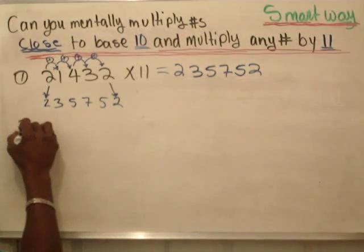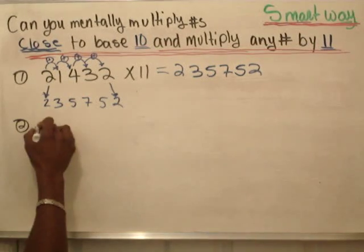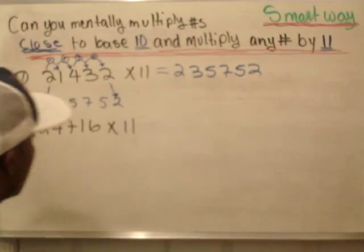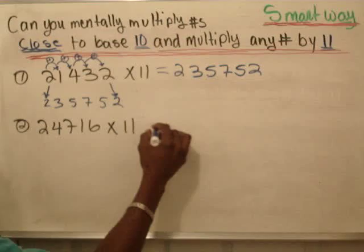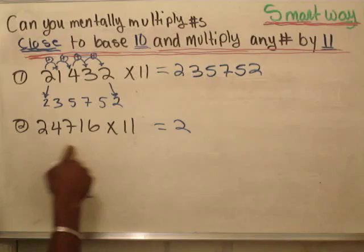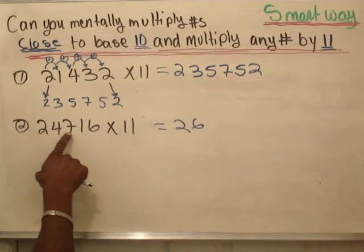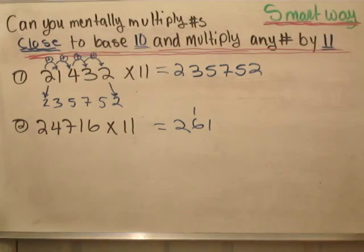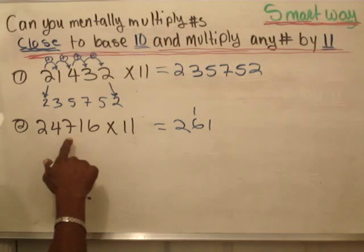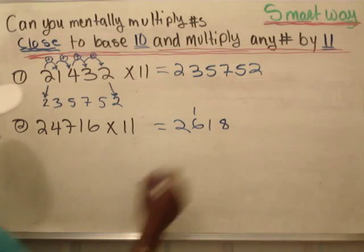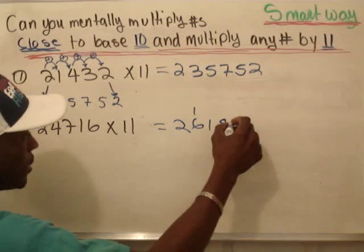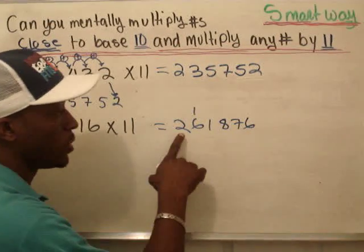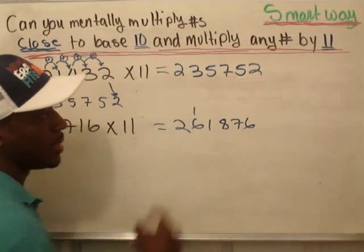Now let's do another one. We have 24716 multiplied by 11. We'll go through 9 steps. We have 2; add the first number onto this, giving us 6; 4 plus 7 gives us 11 — put 1 here and carry another 1. The next number: 7 add onto 1 gives us 8; 1 add onto 6 gives us 7. Don't forget to put the last number, which is 6. The final answer is 2, 7, 1, 8, 7, 6.